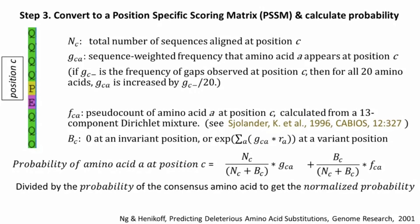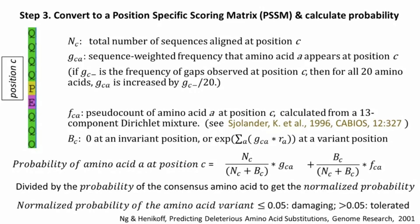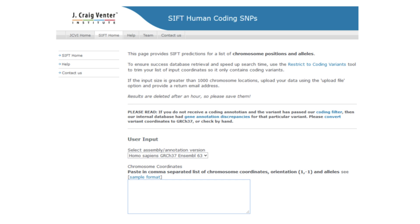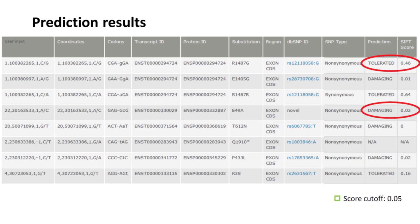If the normalized probability of amino acid A is less than or equal to a cutoff of 0.05, it means that amino acid A is rarely seen at position C in nature. Thus, if we see that the wild-type amino acid is changed to variant A at position C in the protein, this variant A is considered damaging; otherwise it is considered tolerated. SIFT can be used online — you can input the sequence or genomic coordinate, and SIFT will output a table with one row for each variant, telling you whether it predicts the variant to be tolerated or damaging and with what score.